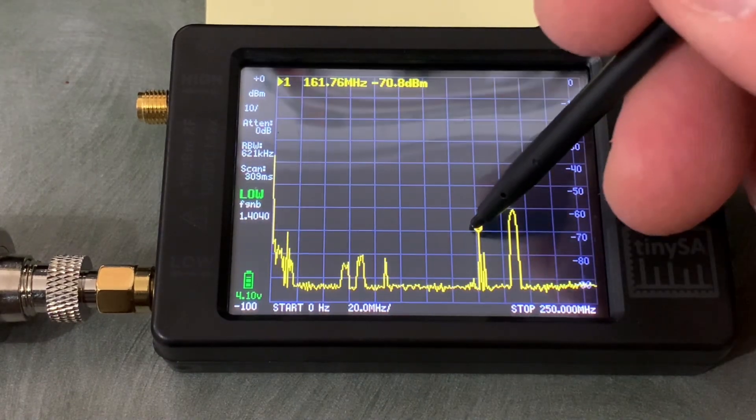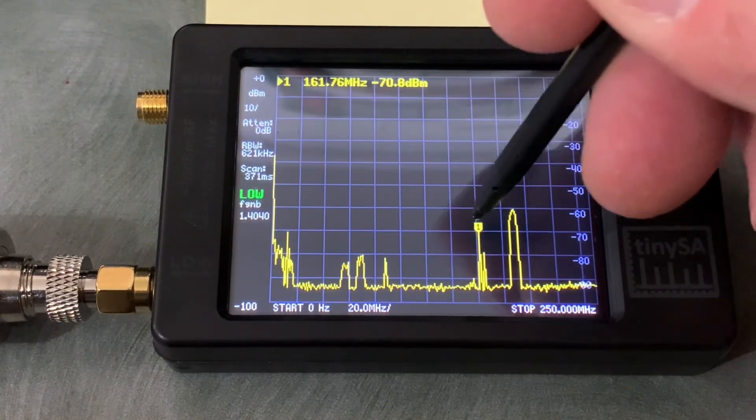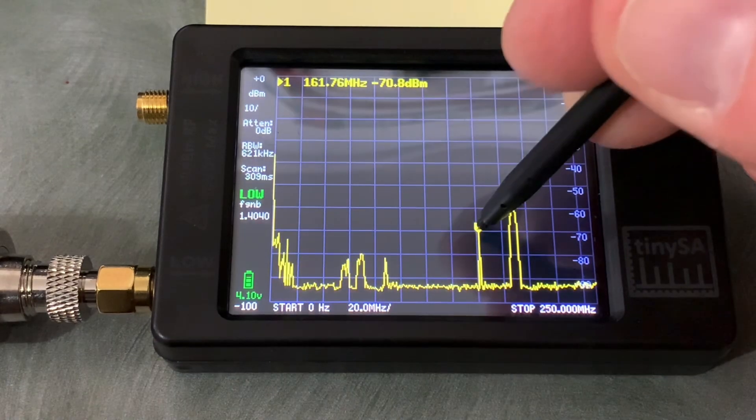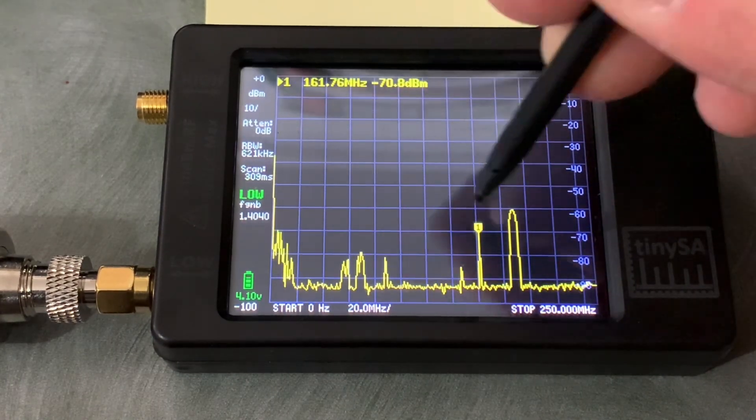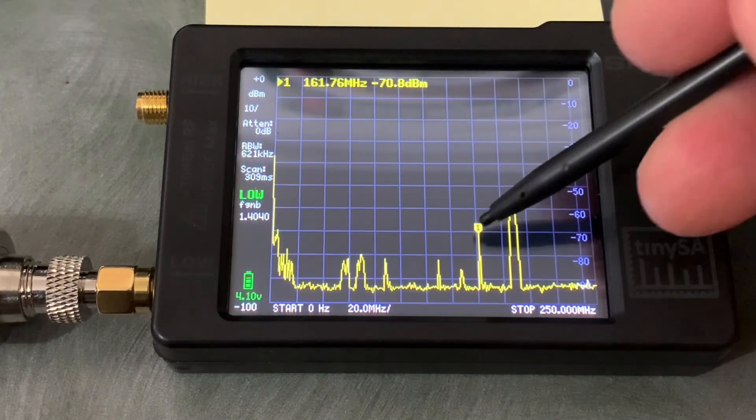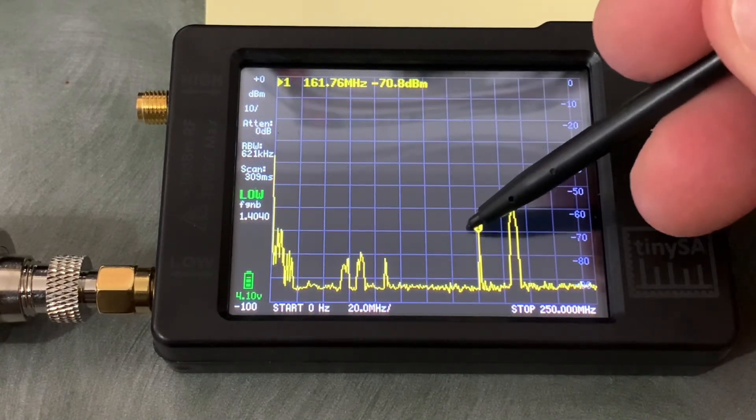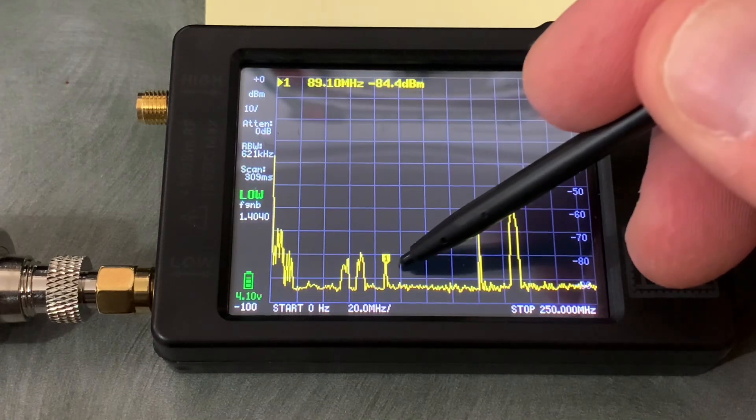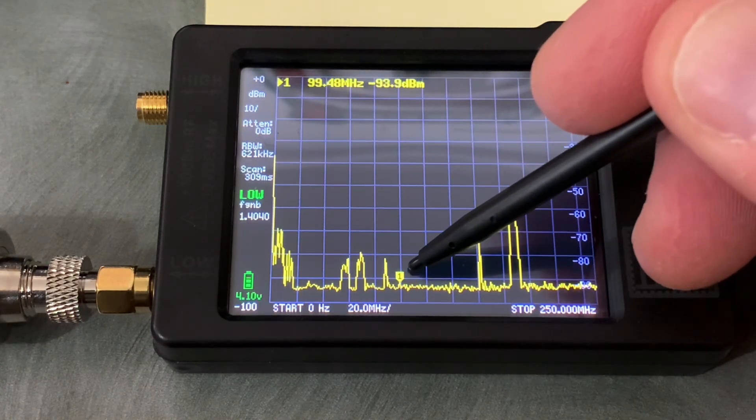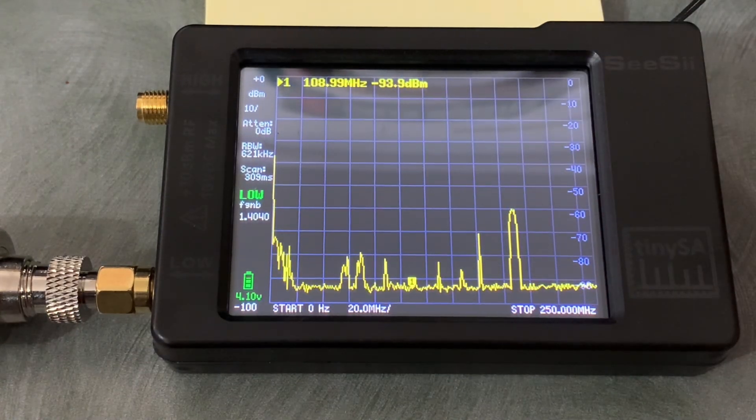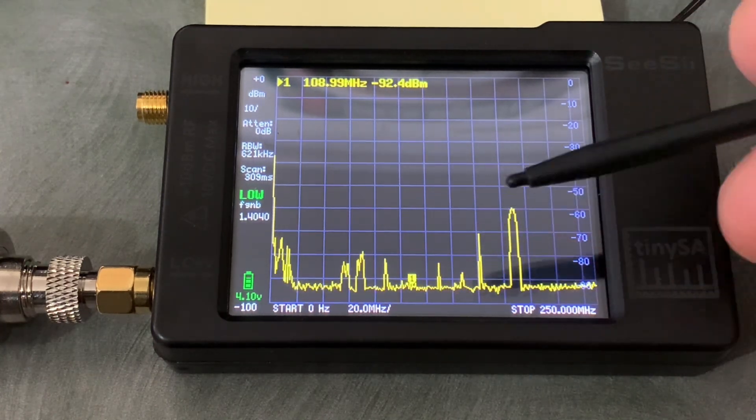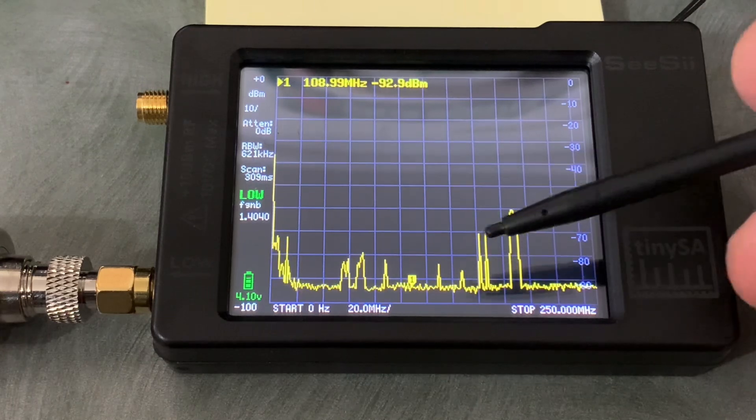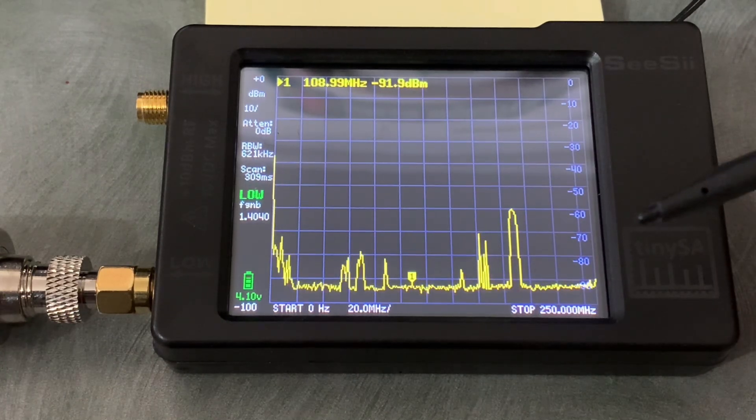There's TVO RF channel 9, and there is the weather bands. Come on... Okay, here is the FM radio part of the spectrum.